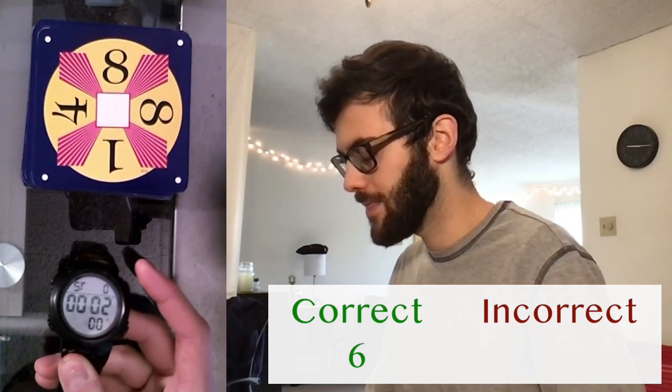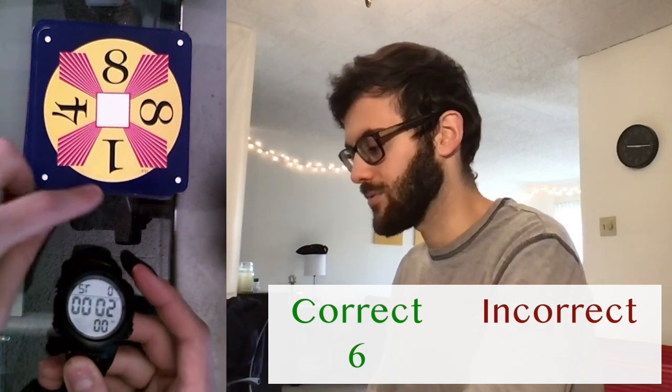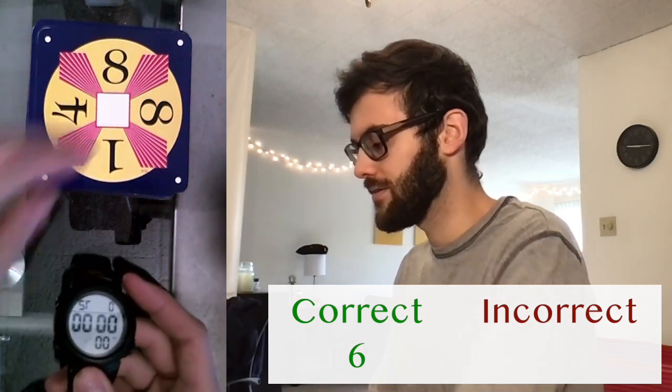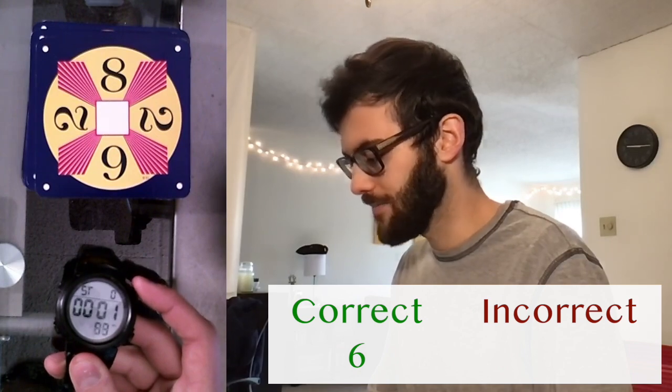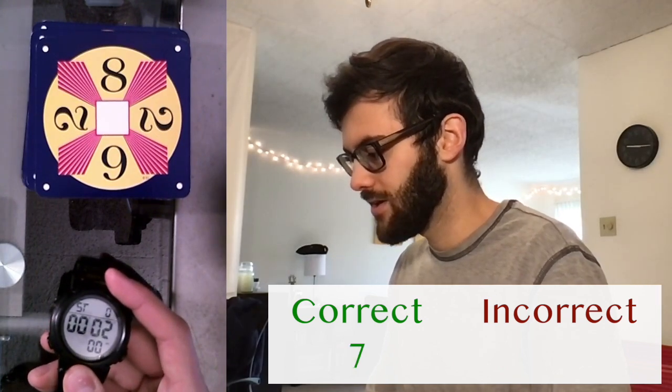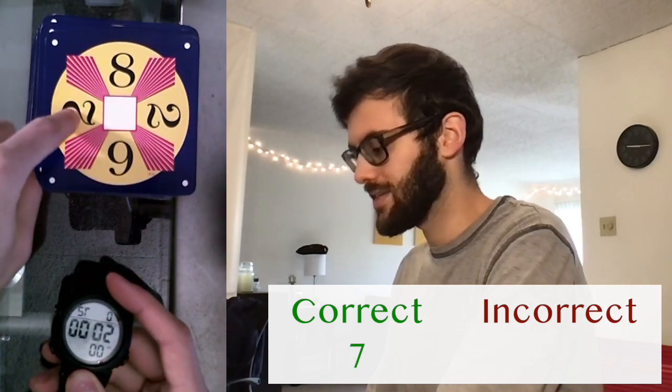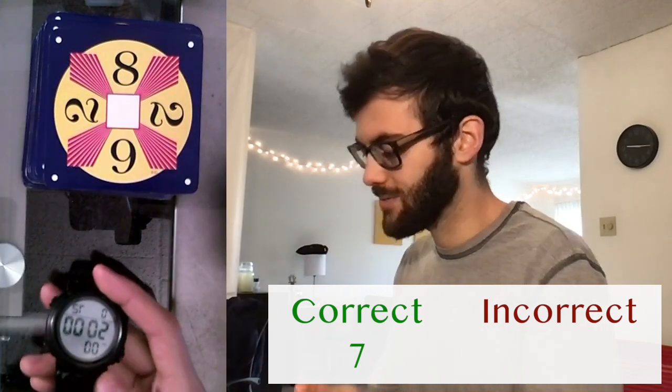3 times 8. 8 minus 4 is 4. 4 minus 1 is 3. 3 times 8 is 24. 6 times 4. Okay, so, 8 minus 2 is 6. 6 minus 2 is 4. 6 times 4 is 24.